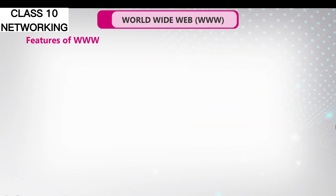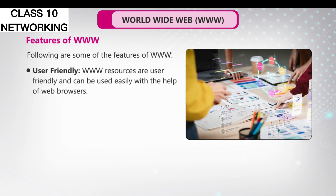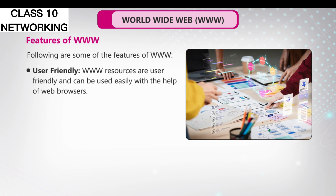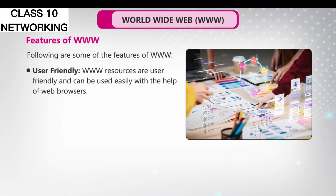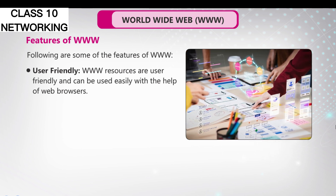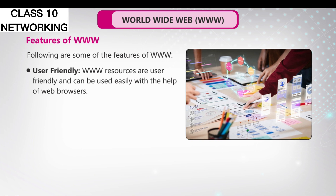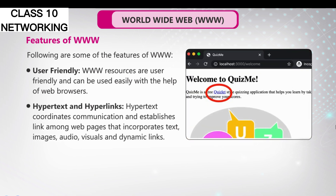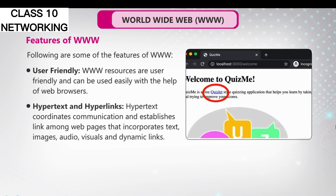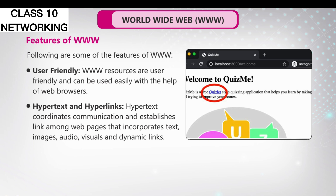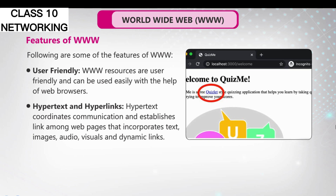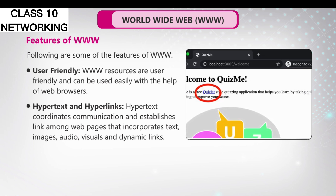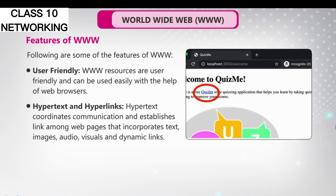Features of WWW. Following are some of the features of WWW. User-Friendly: WWW resources are user-friendly and can be used easily with the help of web browsers. Hypertext and Hyperlinks: Hypertext coordinates communication and establishes links among web pages that incorporate text,